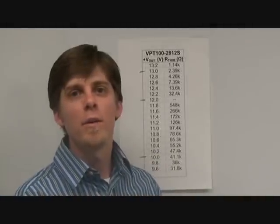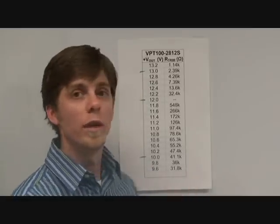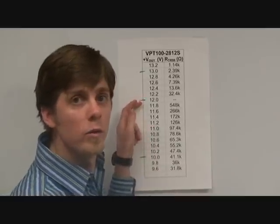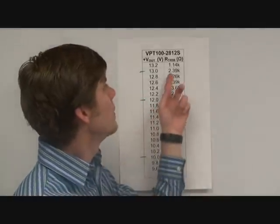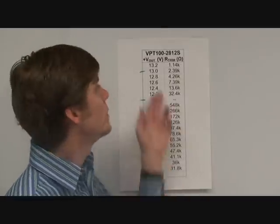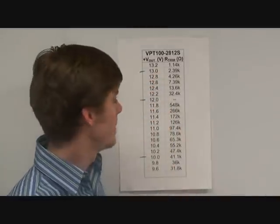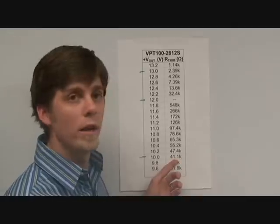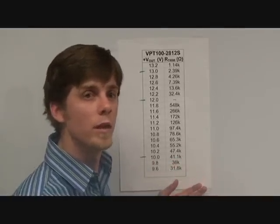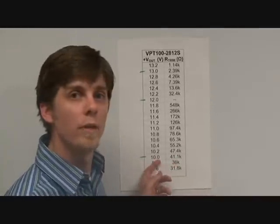In the example I will demonstrate in the lab later for the VPT100-2812S, I'll operate the converter at its nominal 12 volts output. And then I will connect a 2.39K resistor in the trim up position to achieve 13 volts output. Finally, I'll connect the 41.1K resistor in the trim down position to demonstrate 10 volts V out.